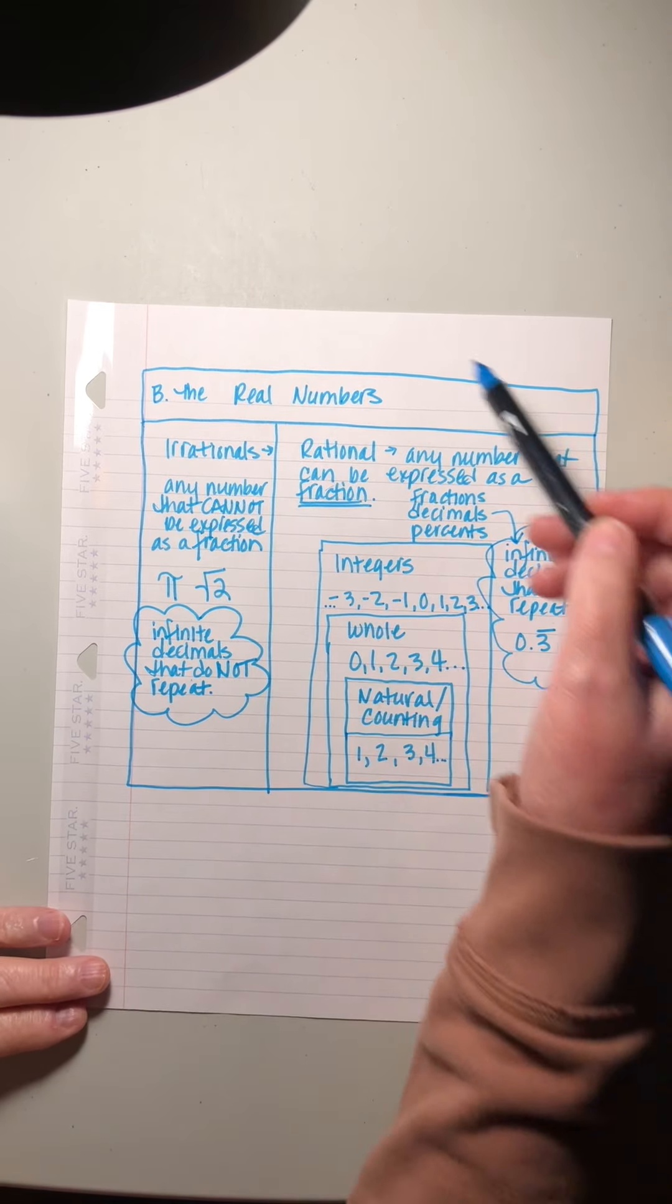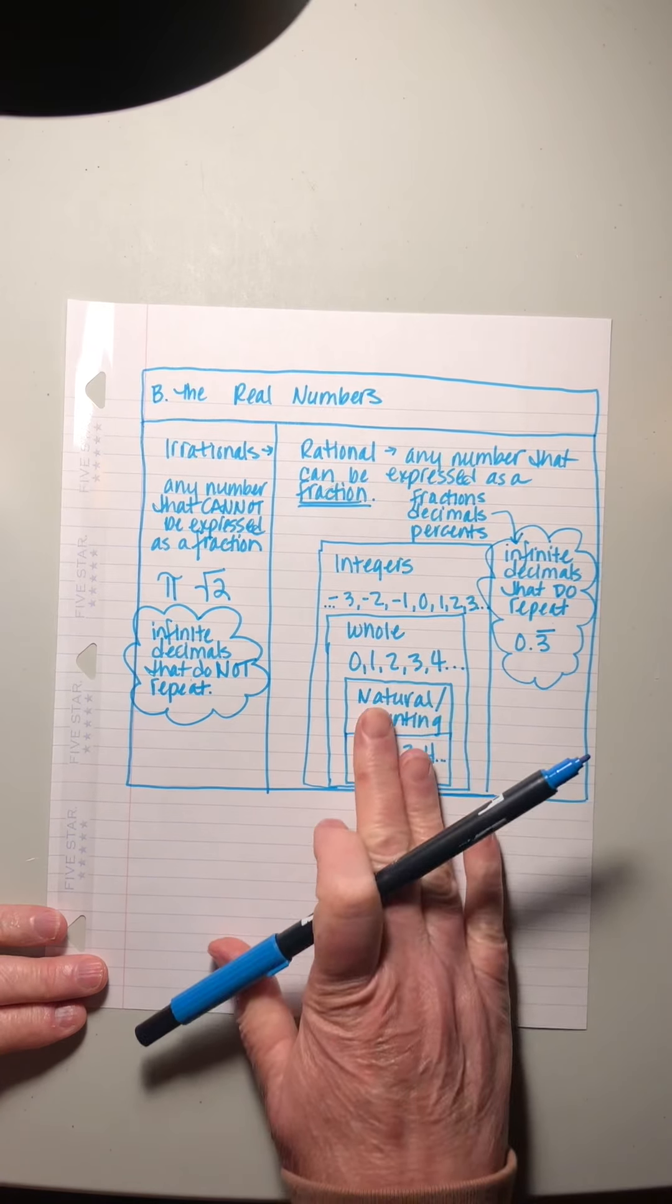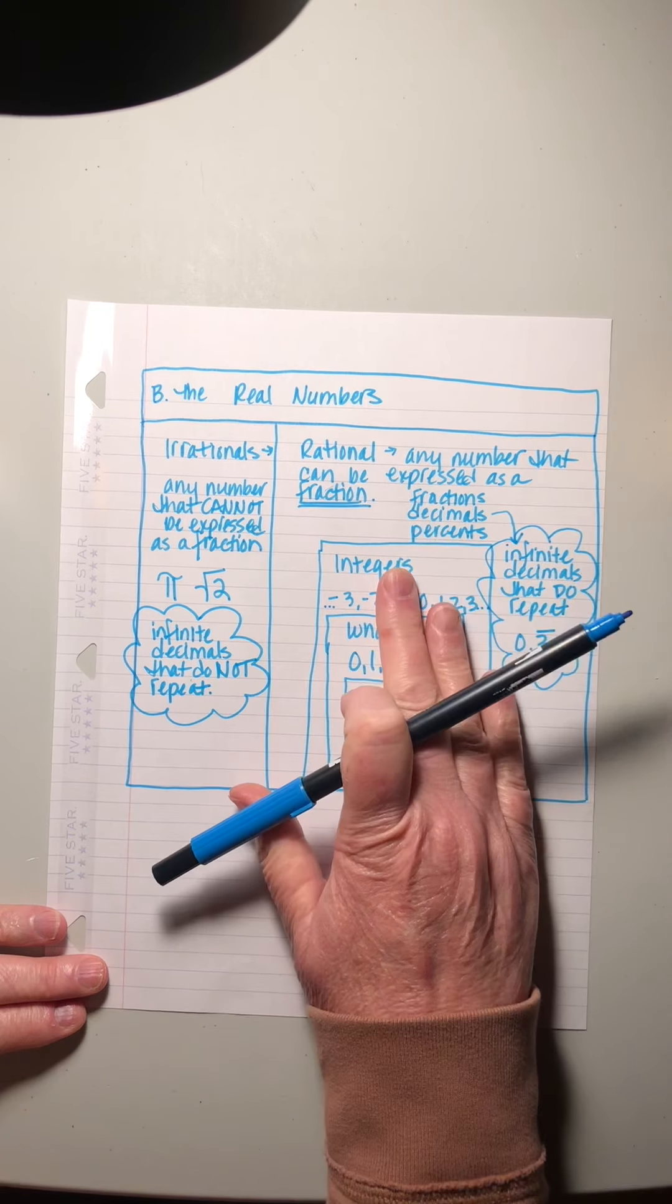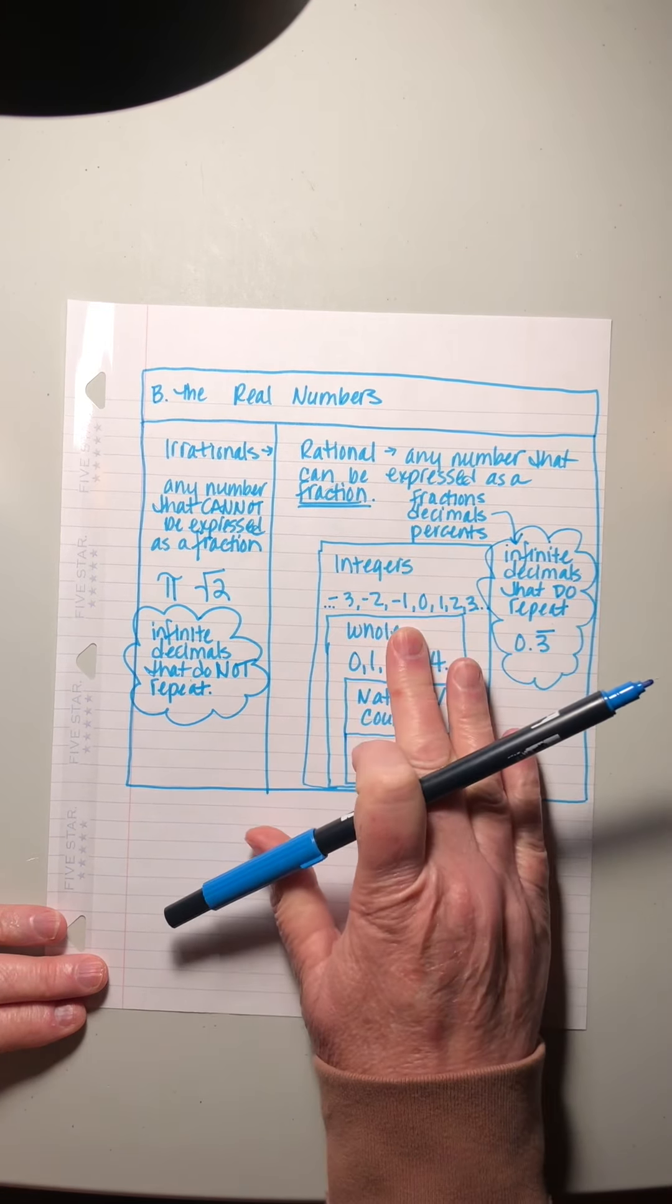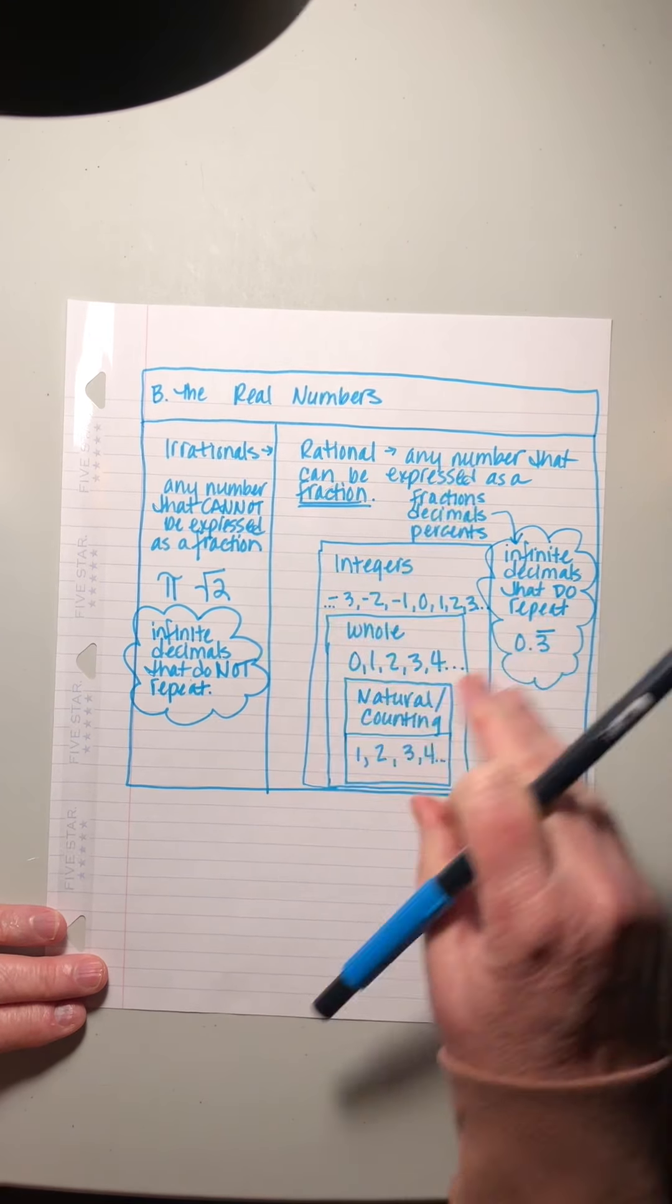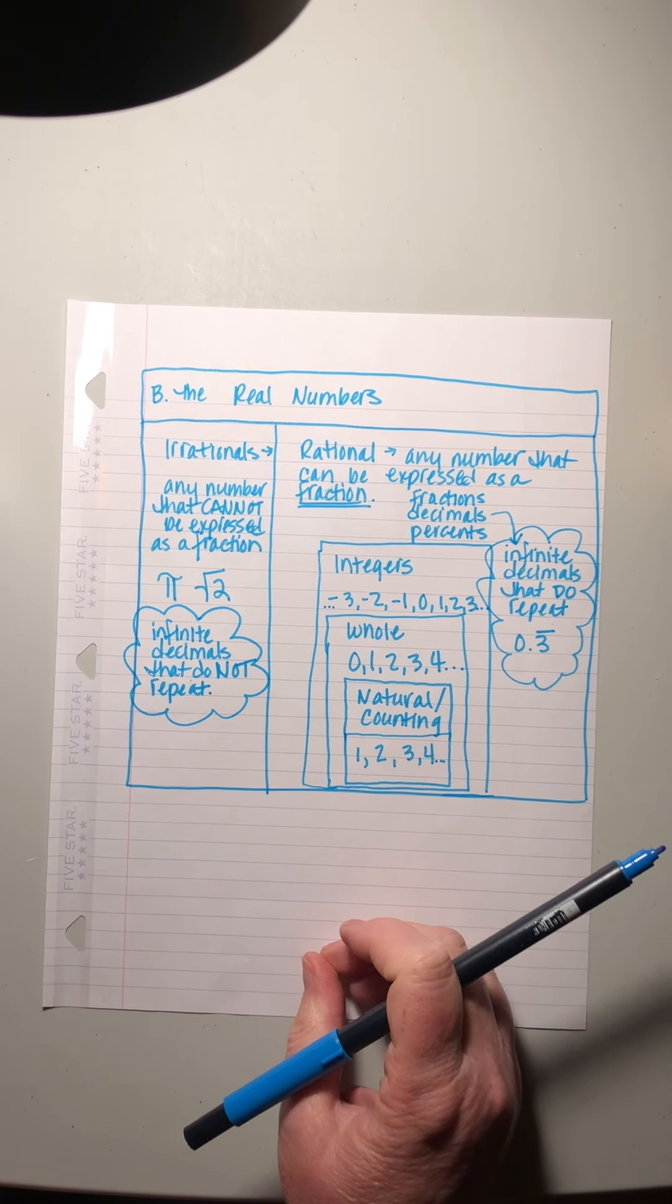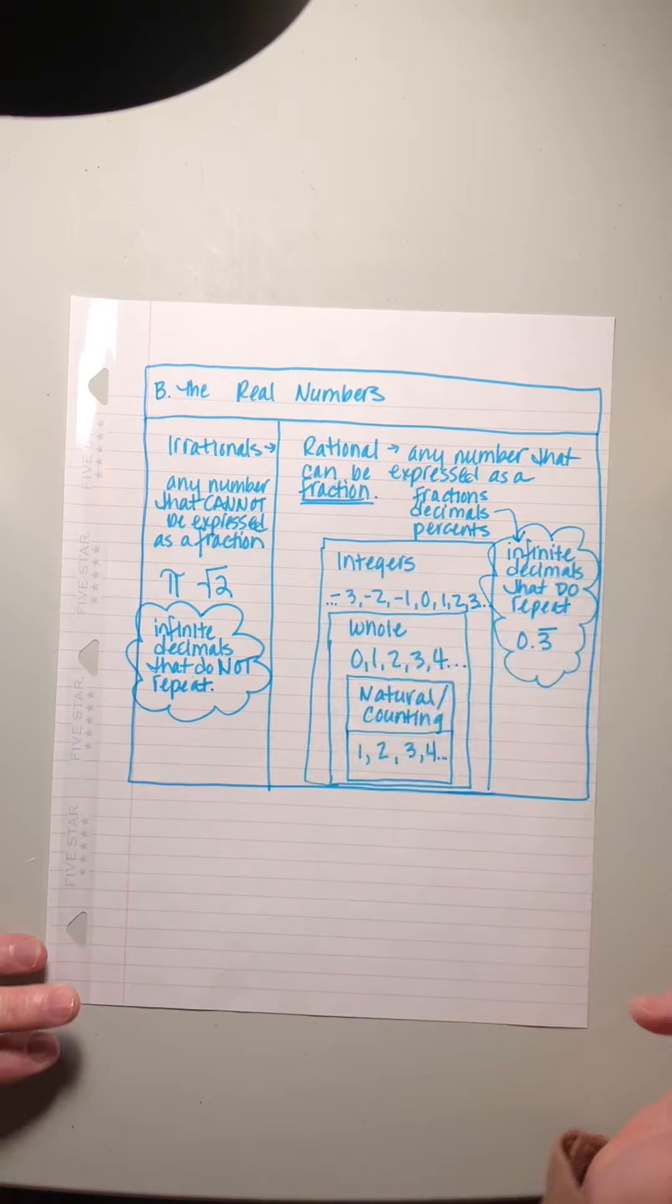So this whole group of numbers, these guys all fit inside of each other, right? They're all, the rational numbers include the integers. The integers include the whole numbers. The whole numbers include the natural or counting numbers. These guys all like telescope inside of each other. And the irrationals are like the goofballs that don't overlap at all with these guys.